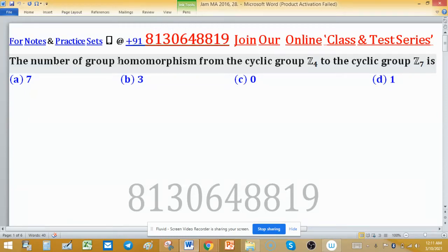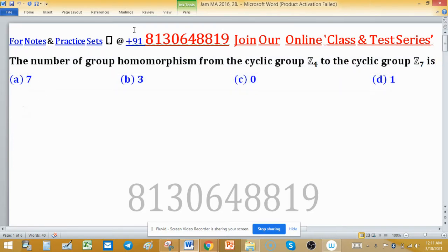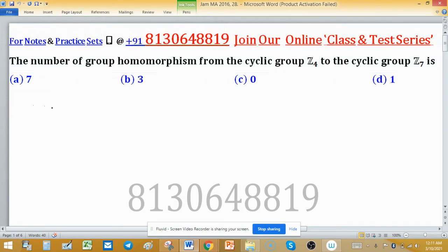The number of group homomorphisms from the cyclic group Z4 to the cyclic group Z7. In general, a cyclic group Zn is cyclic as well as abelian with respect to the operation addition modulo n.